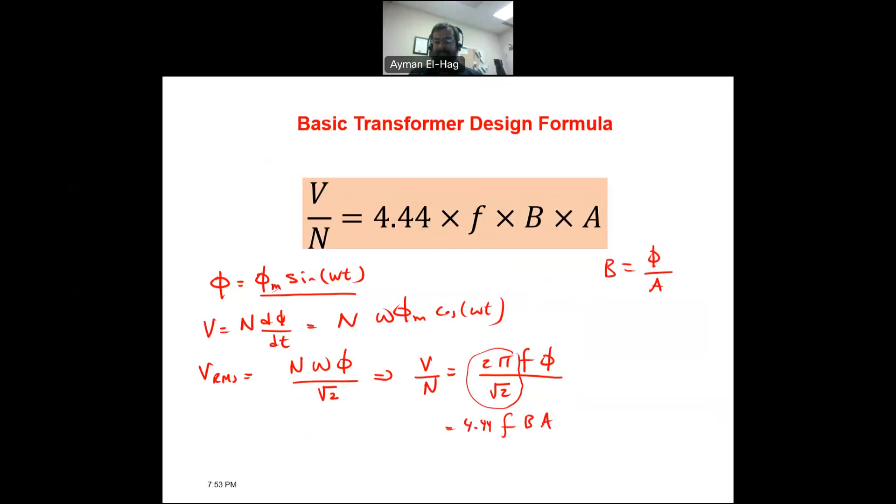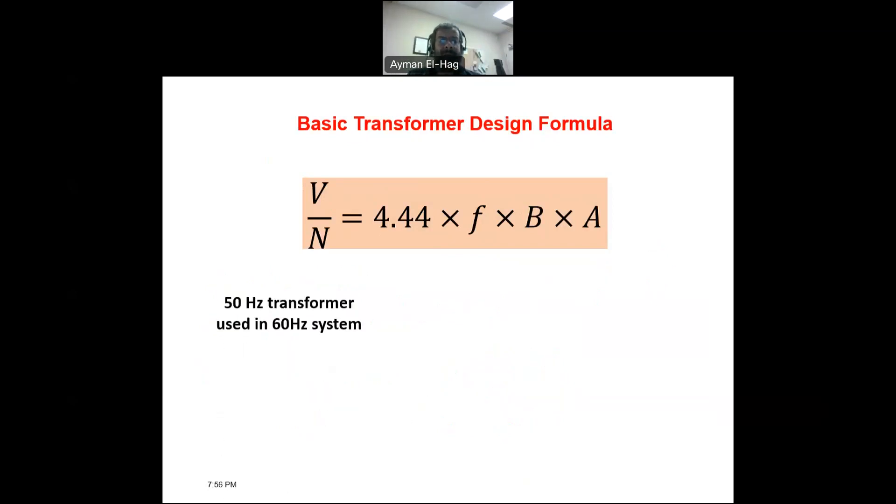Now, having this background, let's answer our question. And, let's start. If we have a 50 hertz transformer, and we use it in a 60 hertz system. So, now, when I design a transformer, A is now fixed. I cannot play with A. A is the cross-sectional area of your transformer core. Voltage per turn, I don't play with it. Number of turns is fixed. The voltage apply is fixed. So, this is fixed, and this is also fixed. Now, when I increase the frequency from 50 to 60 hertz, what will happen to the B? B, the flux density, will be reduced. Is this good or bad?